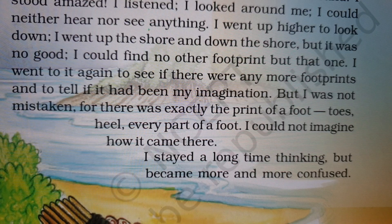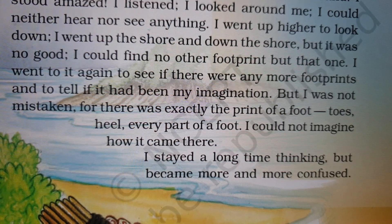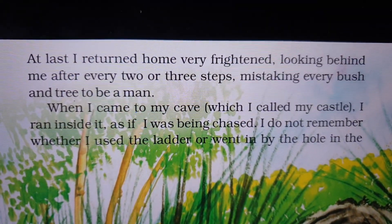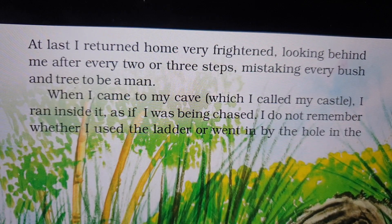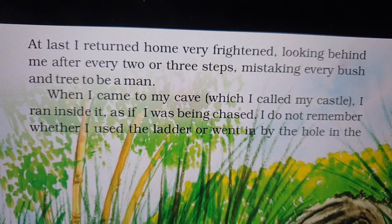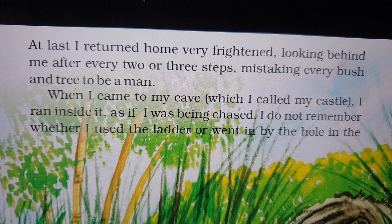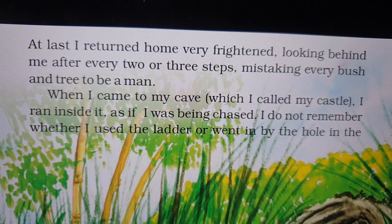I could not imagine how it came there. He is wondering how a footprint can appear on the sand. I stayed a long time thinking but became more and more confused — he was standing there thinking but only getting more confused. At last, I returned home very frightened. Robinson Crusoe is very frightened and gets back to his home, looking behind him after every two or three steps because he is so scared. Mistaking every bush and tree to be a man — he thinks every tree is a human coming to attack him.